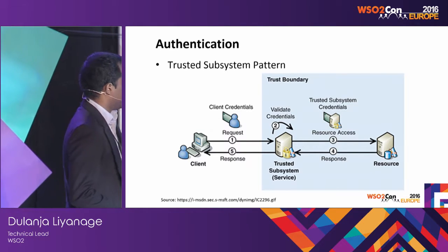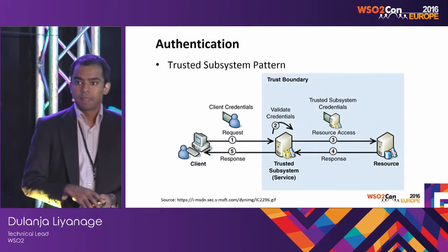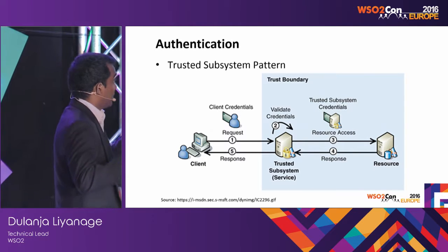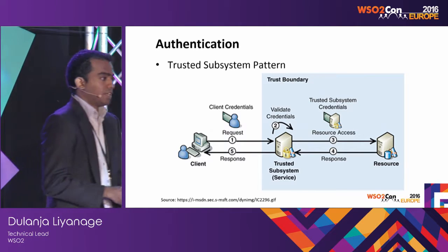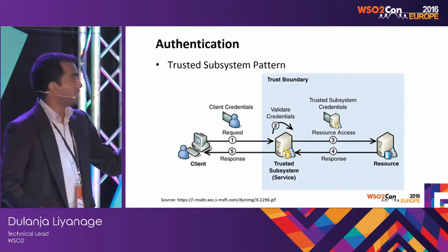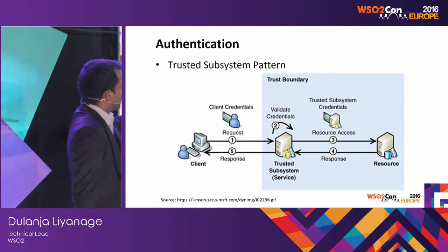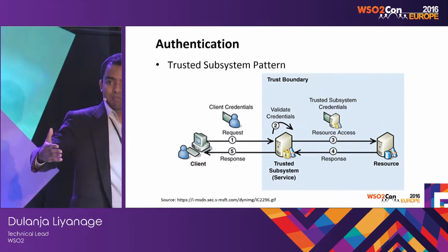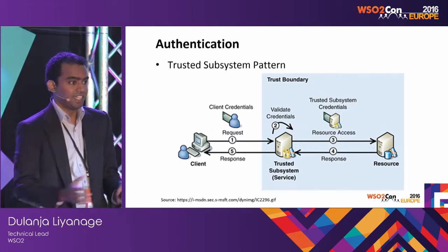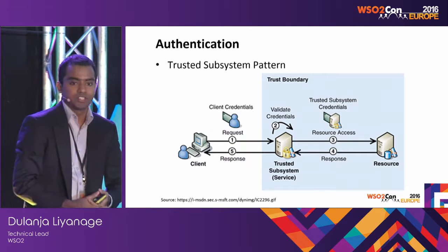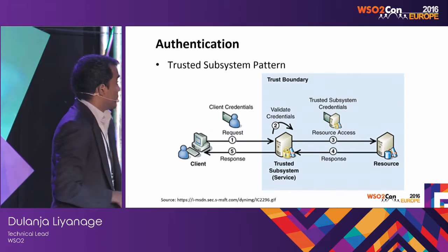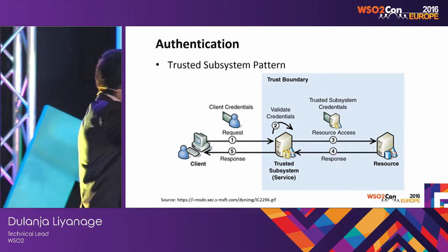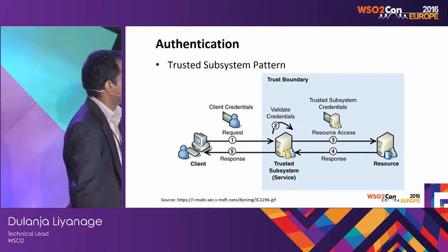Another pattern you can use in your organization is the trusted subsystem pattern. The nodes or network elements inside your internal network can be treated as within a trusted boundary. There is only a single entry point to the trust boundary from outside. The client authenticates to this entry point service — which can be an API gateway — using its client credentials. After that step, those client credentials are no longer used. Communication within the trust boundary happens through trusted subsystem credentials such as X.509 certificates. The entry point extracts the user's attributes needed for further processing and sends those to other systems using certificates or another trusted subsystem mechanism.